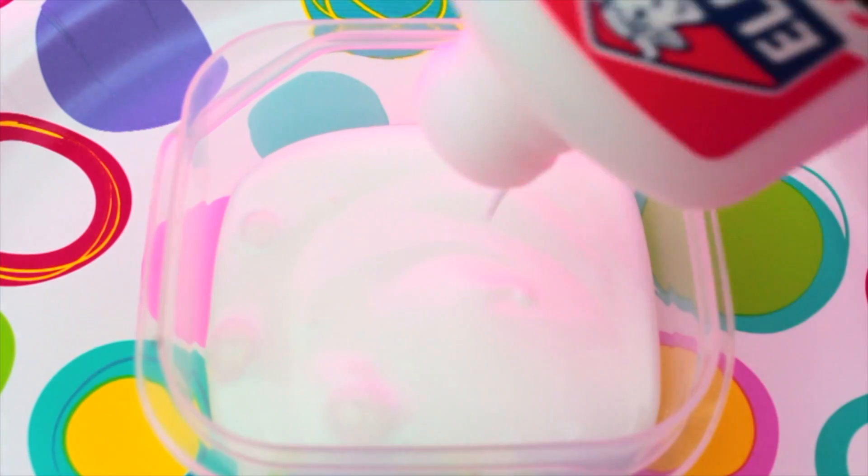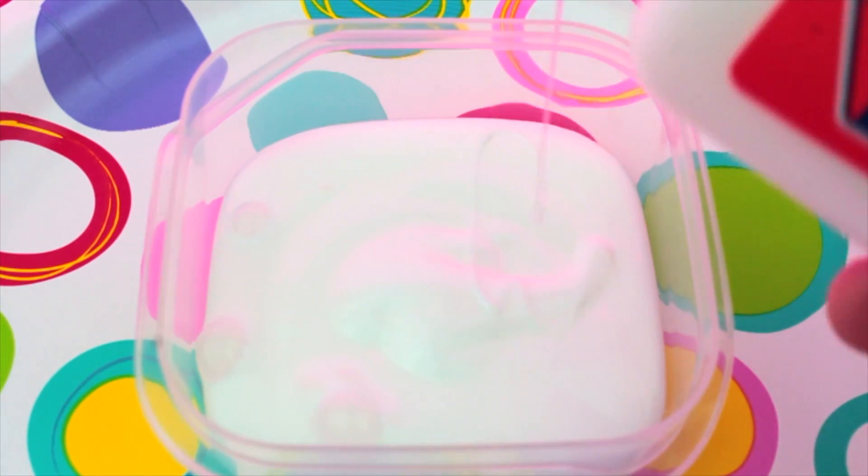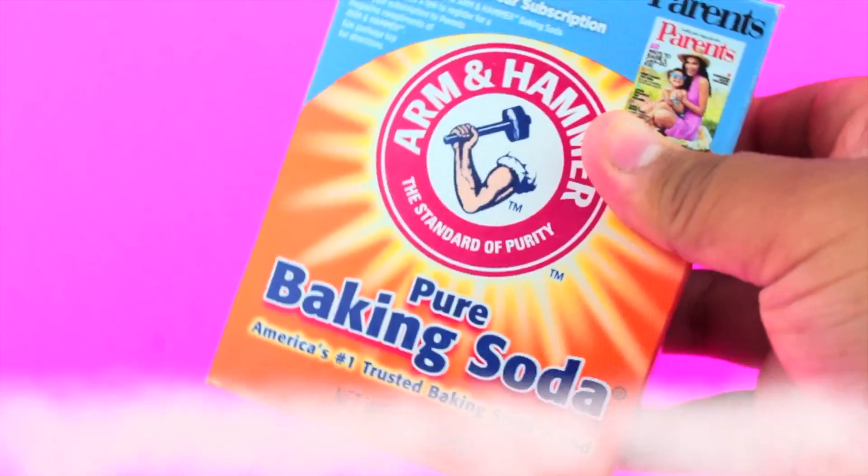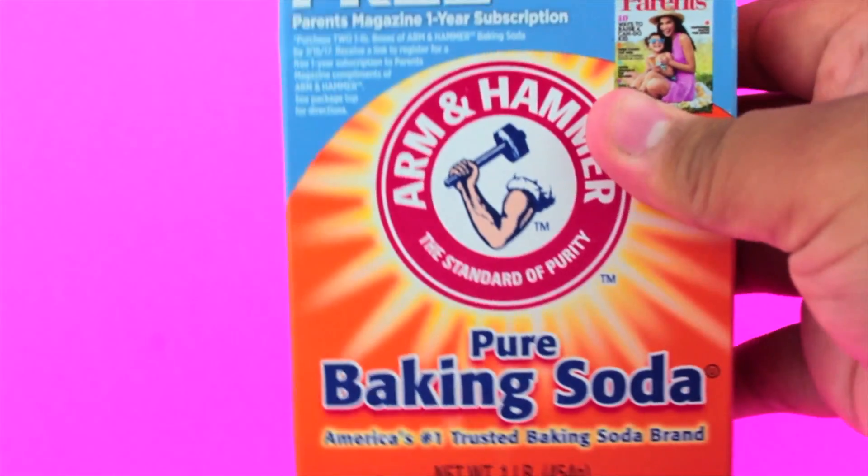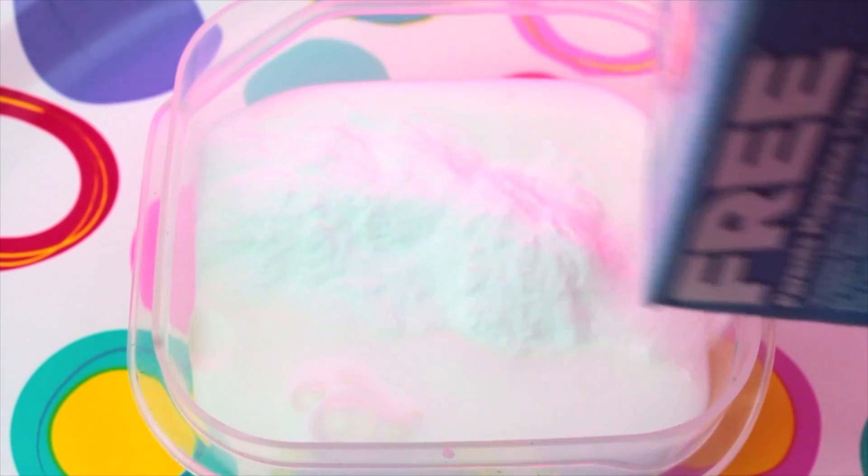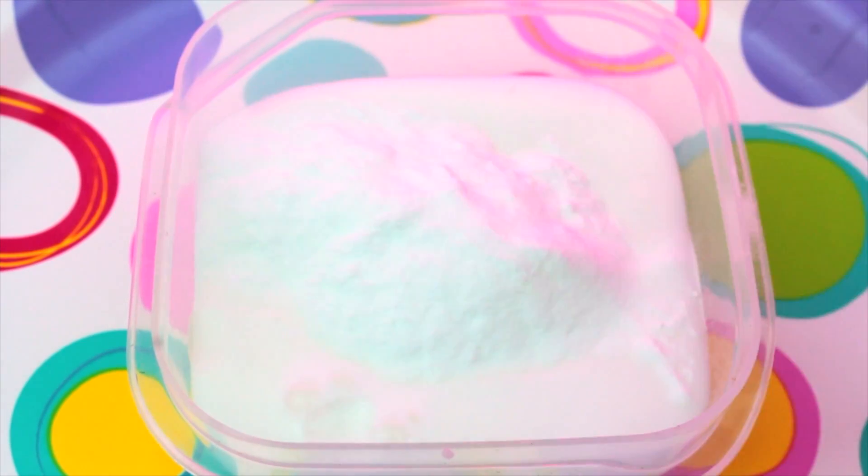For this fizzing slime, all I did is I grabbed my glue and then I just put like almost a whole cup of it in there, and then I just added some baking soda. For the baking soda I probably added like half a cup in there and I just started mixing that together with the glue.